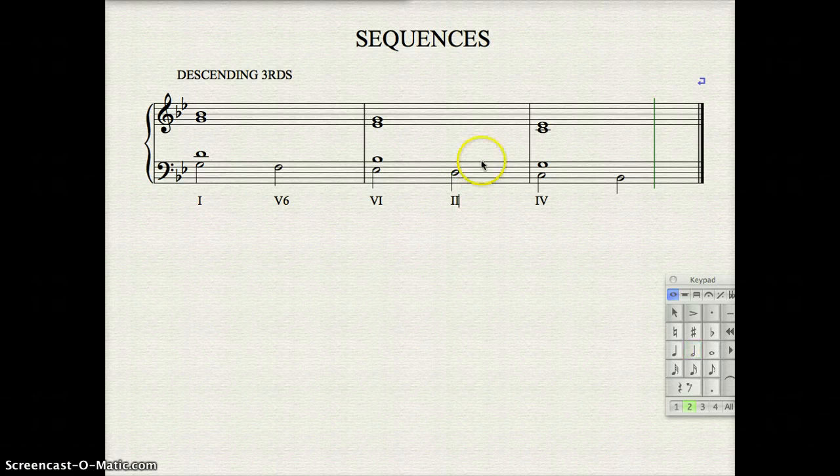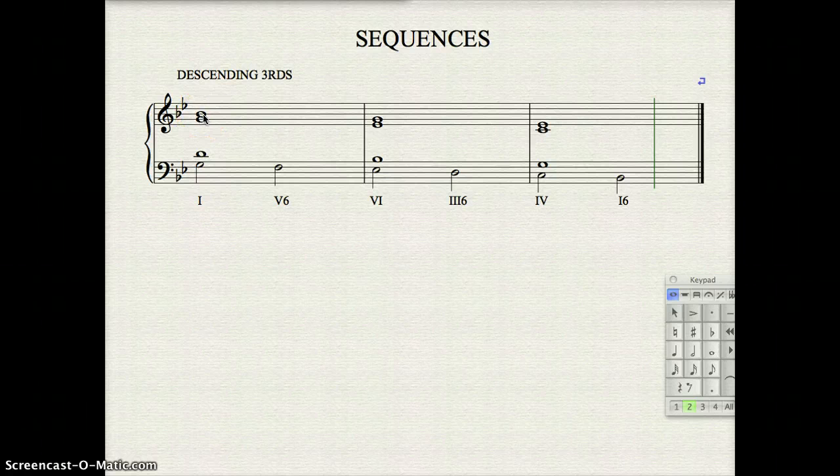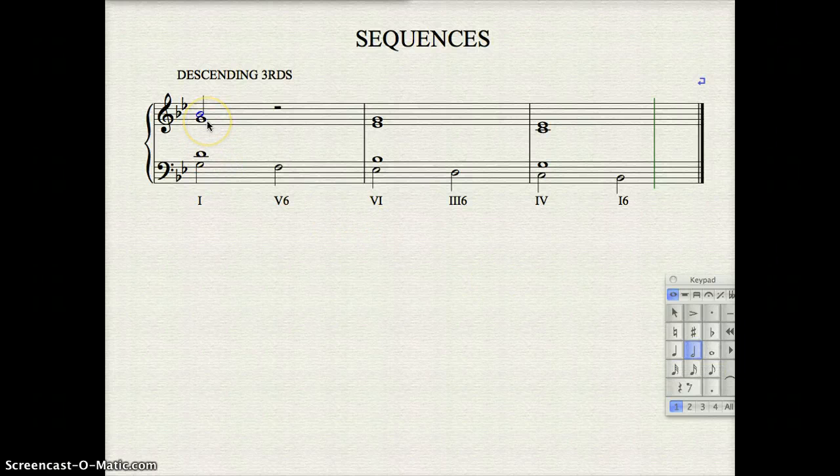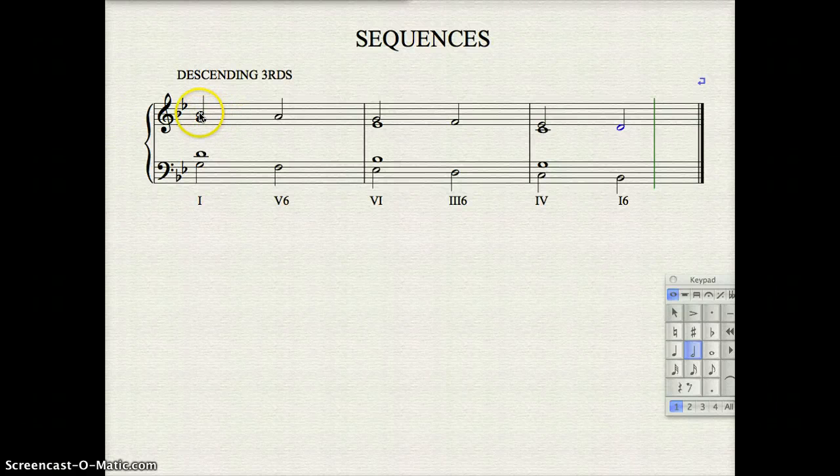And then down a third, the three-six, and again down a third, the one-six. So, while it's not imperative, it is most common that the soprano has the third so that you're in parallel tenths with the bass for this kind of pattern. So you get the parallel tenths between bass and soprano, so the soprano moves down by step as well.